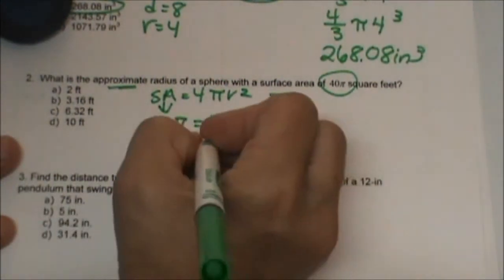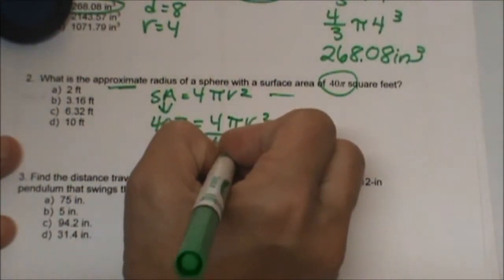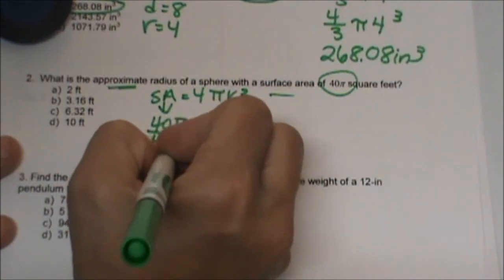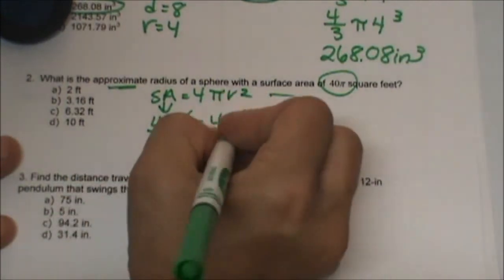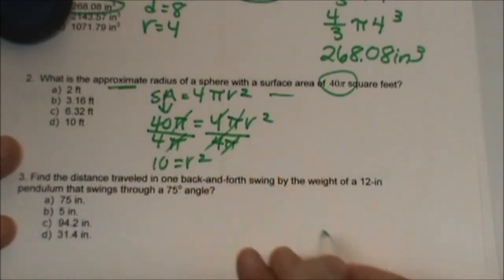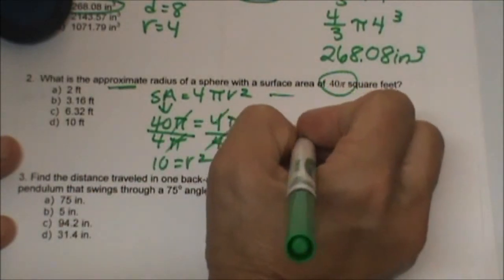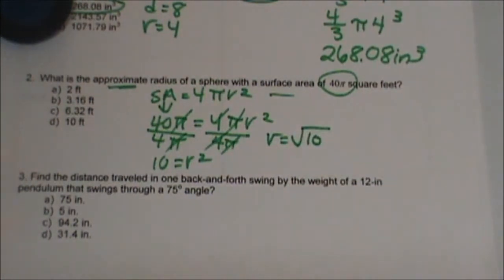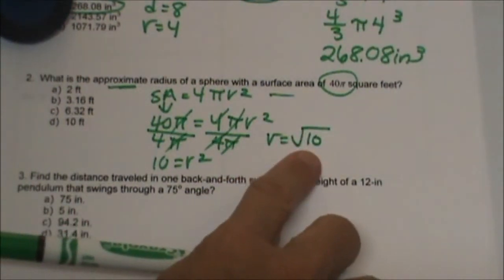To algebraically solve this we're going to divide by 4π, divide by 4π. Well isn't that handy? The π's cancel and I'm just left with 10 equals r², so that means r is the square root of 10 and that is what they're asking for.